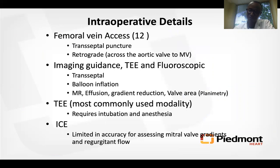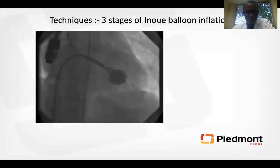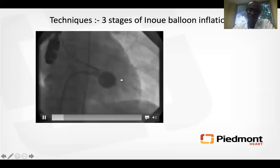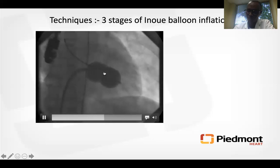For the procedure, it is a transfemoral venous access, transseptal puncture approach. Imaging guidance is usually TEE or fluoroscopy, though some institutions use intracardiac echocardiography. In my experience, we use transesophageal echocardiography for most of our procedures. The distal balloon inflates first, the proximal balloon second, and the middle part third — and that is what performs the commissurotomy.